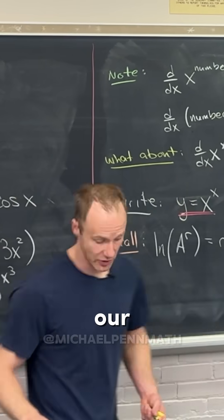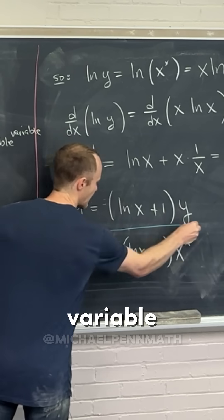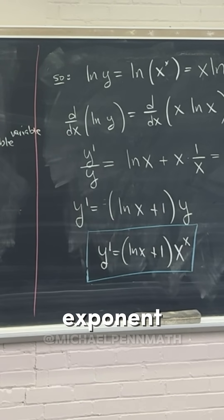And that would be it. That would be our derivative of our crazy looking function where we have a variable in the base and a variable in the exponent.